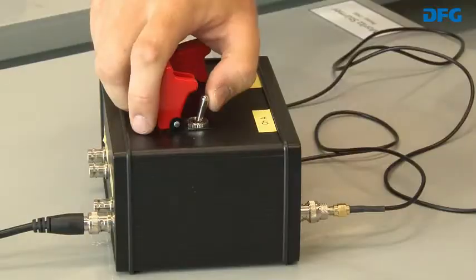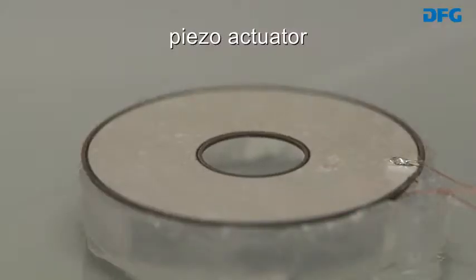If you glue two Piezo layers together and interconnect them electrically, one layer expands while the other contracts. As a result, the Piezo stack bends. Have a look. I've set up a round Piezo actuator. If I apply a voltage, you'll see how the Piezo bends.